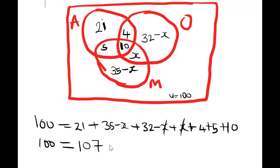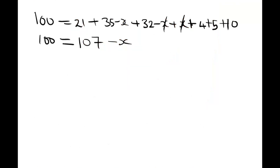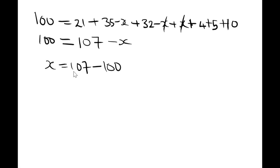So we have 107 on the right side. We are left with a negative x, so making x the subject of the formula, we take x to the other side — the negative sign changes to positive. So x = 107 − 100, which gives 7. Therefore, 7 traders are the people that sell both oranges and mangoes only.